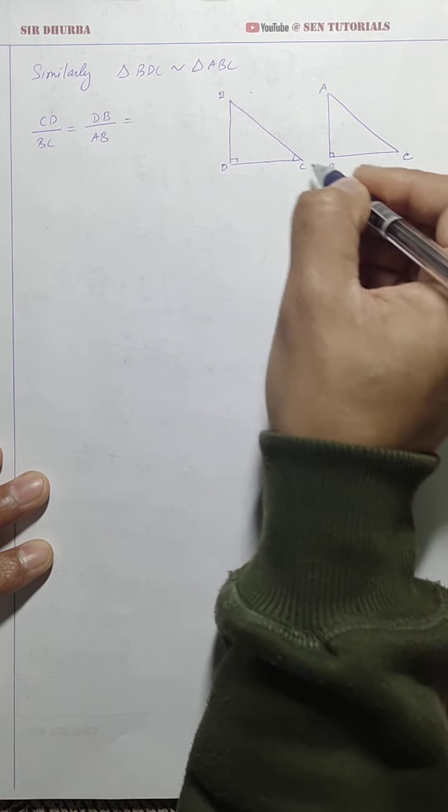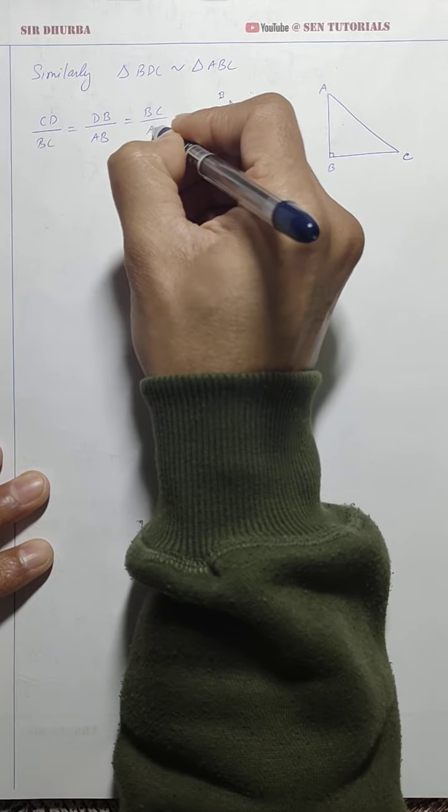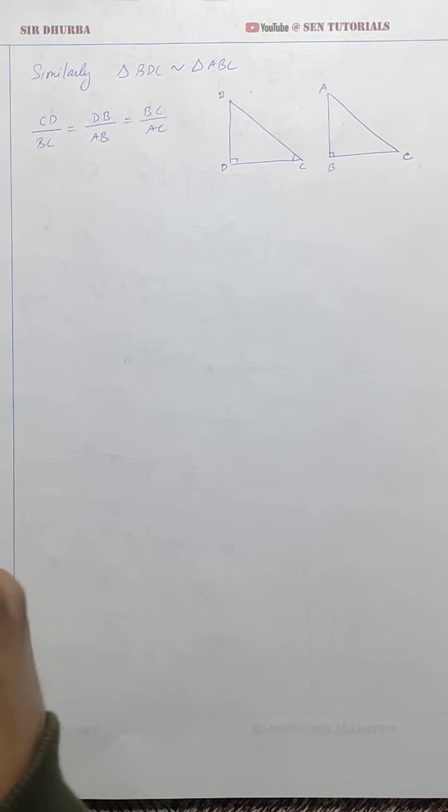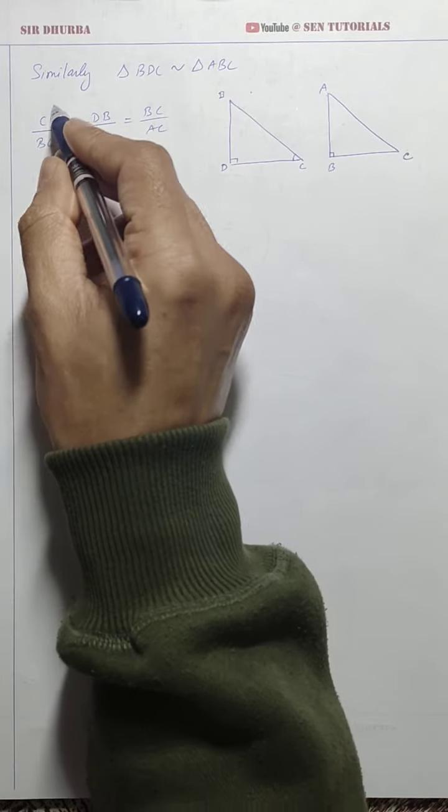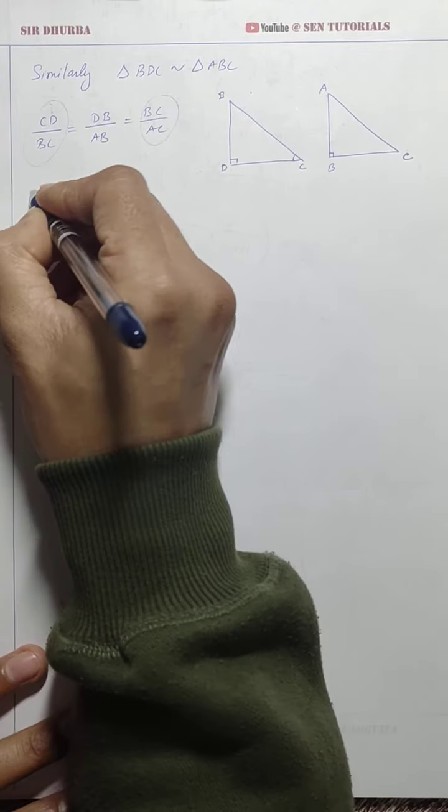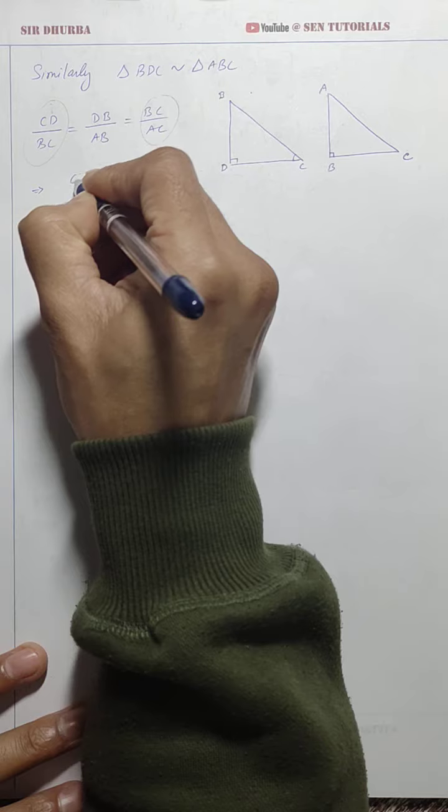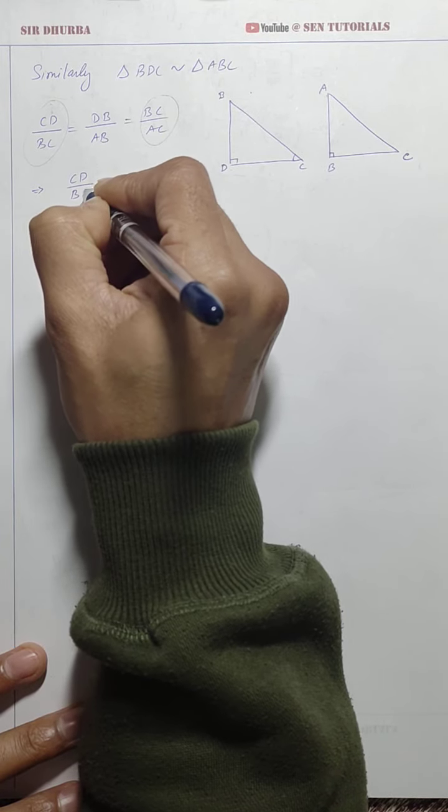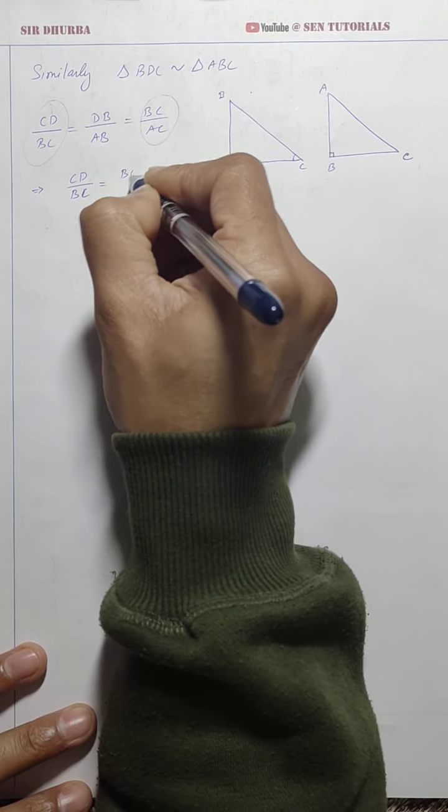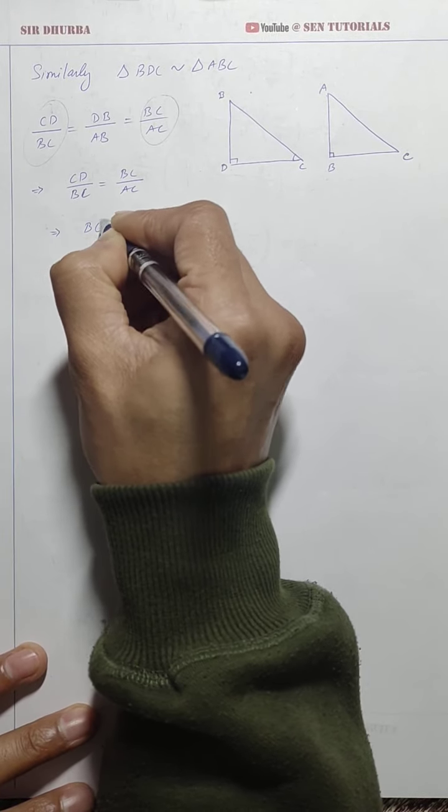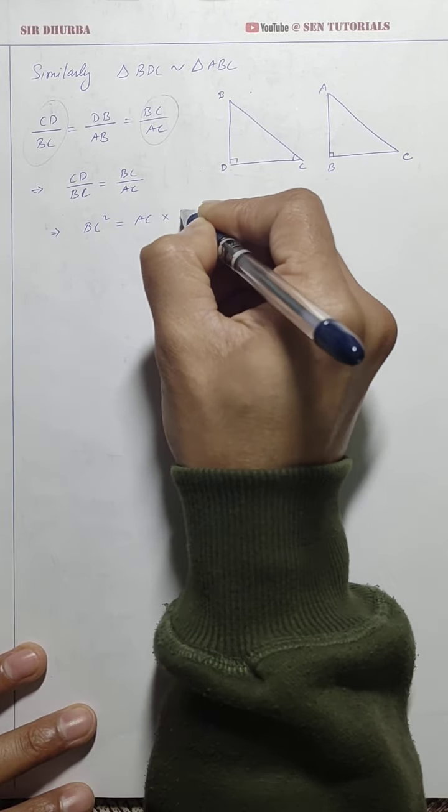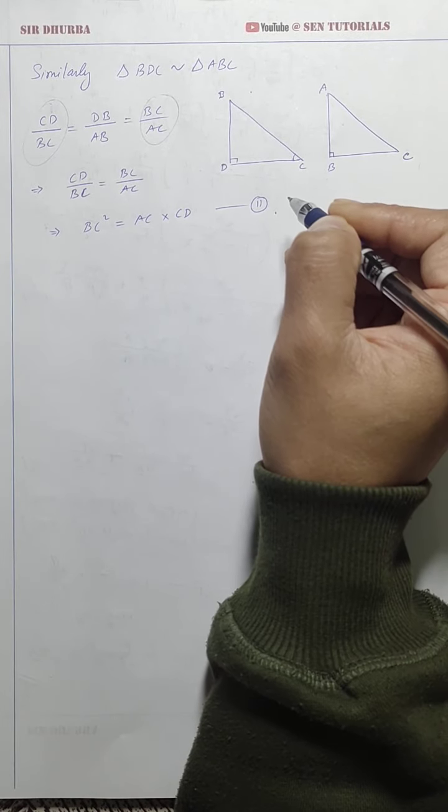So, then, arranging what we can have is, CD by BC will be equal to DB or BD by AB will be equal to BC by AC. So, here, what we will try to get is, we will try to get BC². So, I'll take this two ratios only. This one, not needed. That's why we are not taking it. CD by BC is equal to BC by AC. So, again, cross multiplying BC into BC, BC². This is AC into CD, equation number 2.